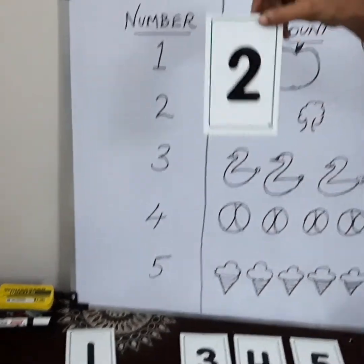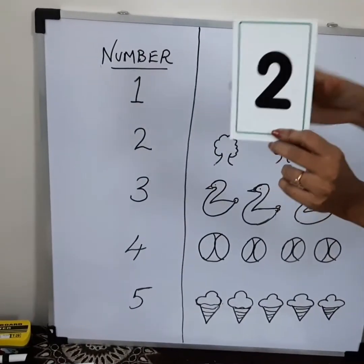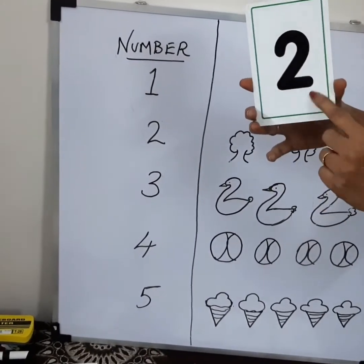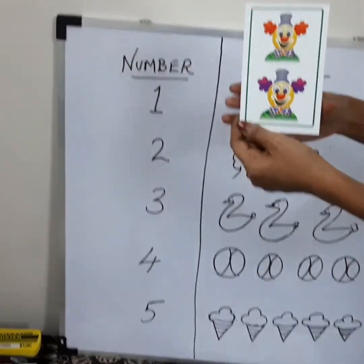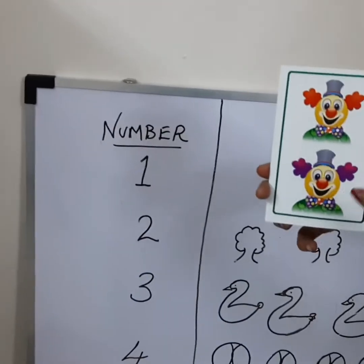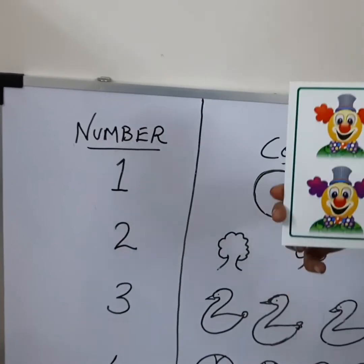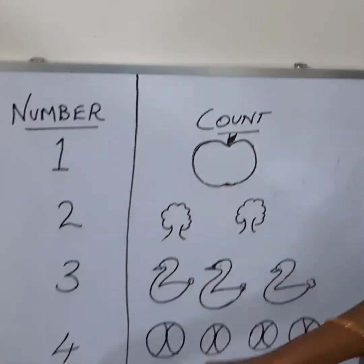After 1 it is 2. Number 2. See? Number 2 goes like this. Yes! See? We have 2 jokers. 1 and 2. 1, 2. Total 2.